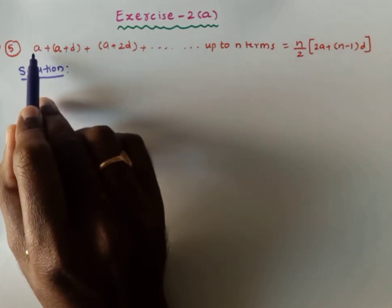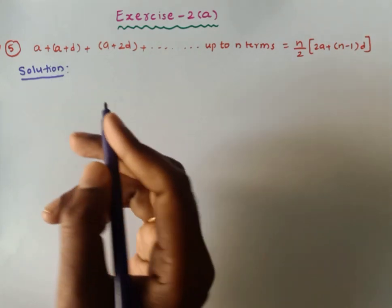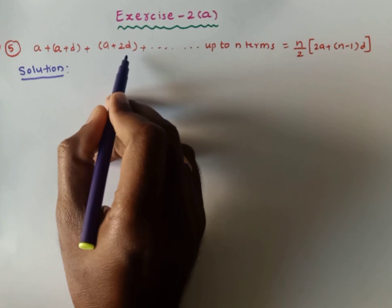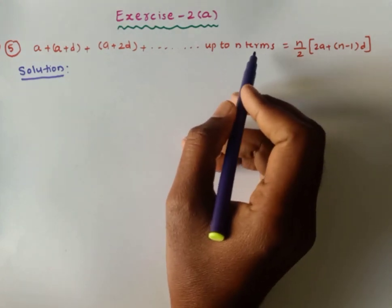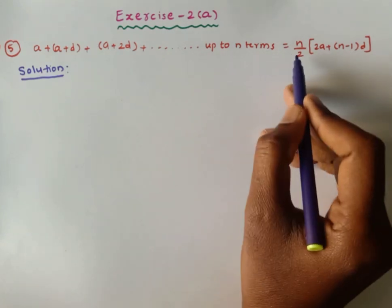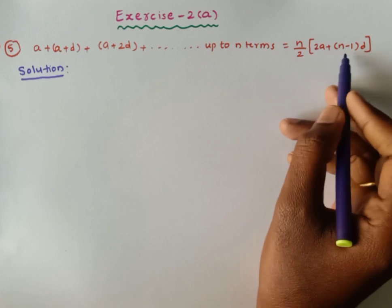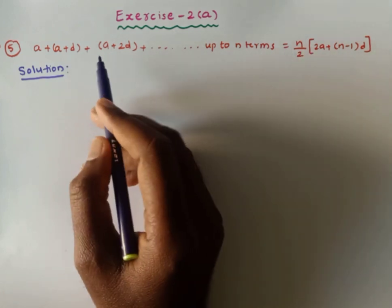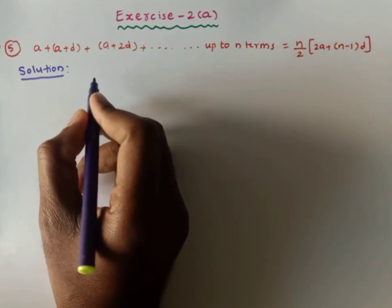All the problems in this exercise are related to the principle of mathematical induction. Here we use the principle of mathematical induction to show the statement: a, a+d, a+2d, and so on up to n terms. The sum is equal to n/2 times (2a + (n−1)d), where a and d are some numbers.